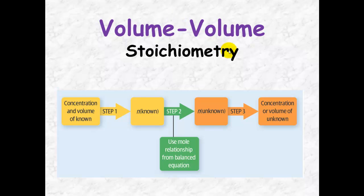Volume to volume stoichiometry. If we know both the concentration and the volume of a known substance, we can calculate the number of mole of that chemical.